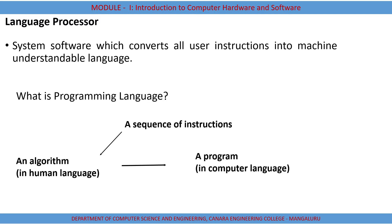Before going to language processors, we should know what type of language we are going to use to interact with the software. A programming language can be a sequence of instructions — what can be termed in human language as an algorithm, or in computer language as a program. We write the program using some language, and that program is executed on a computer.